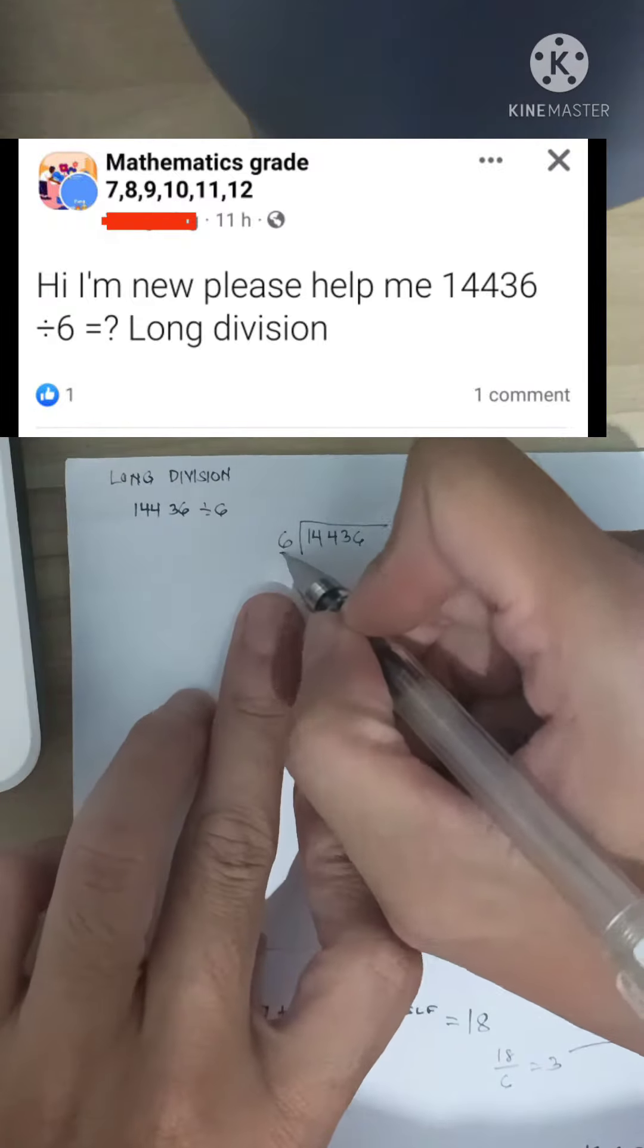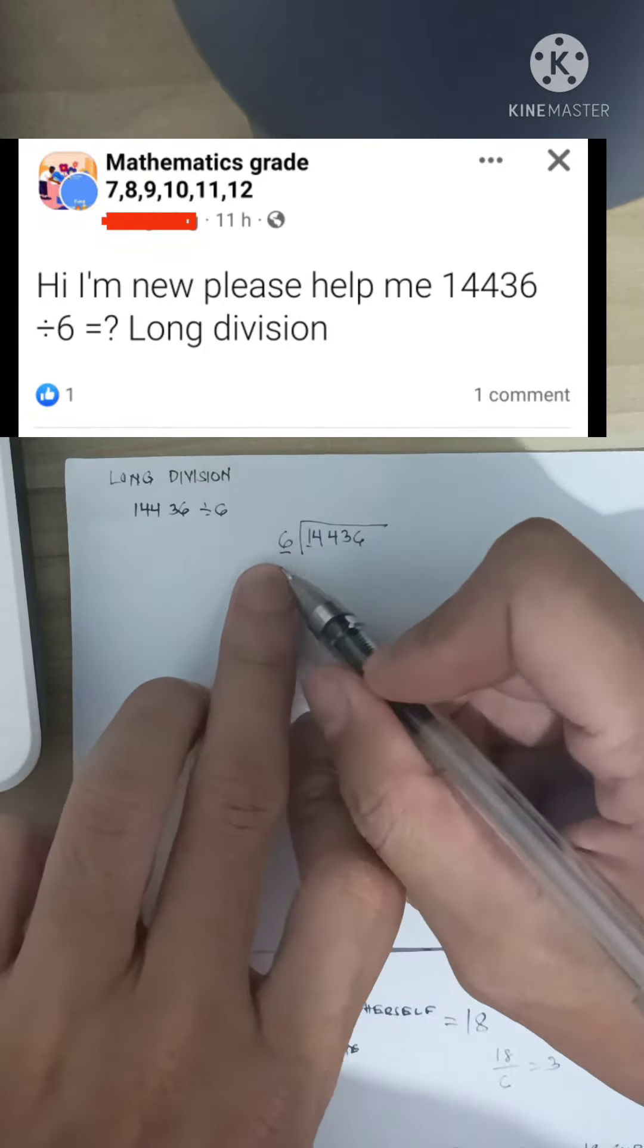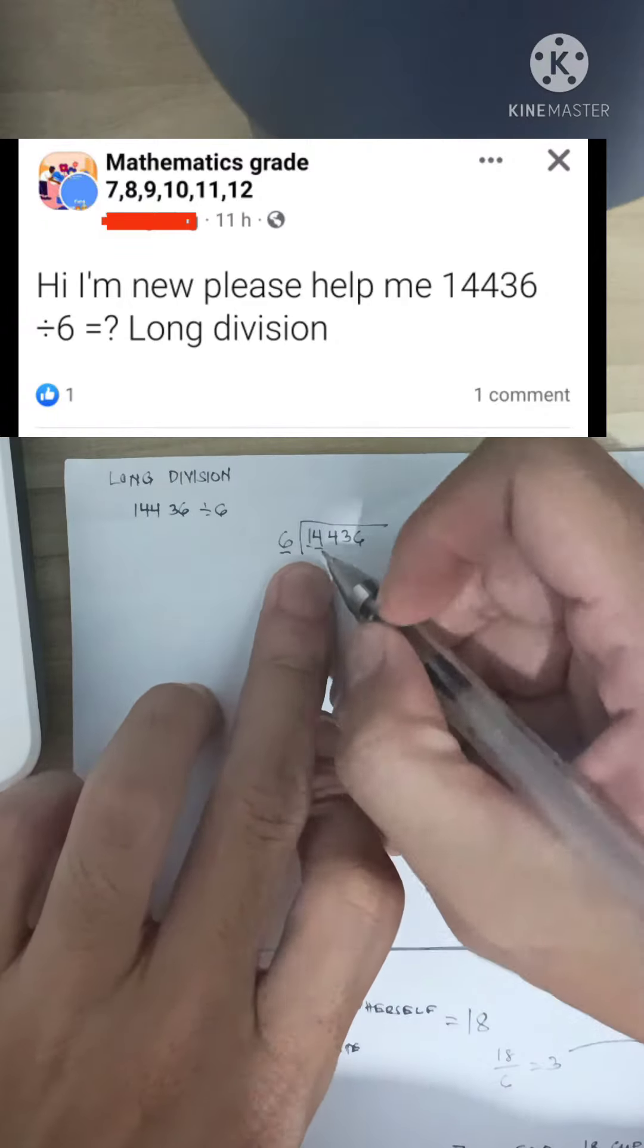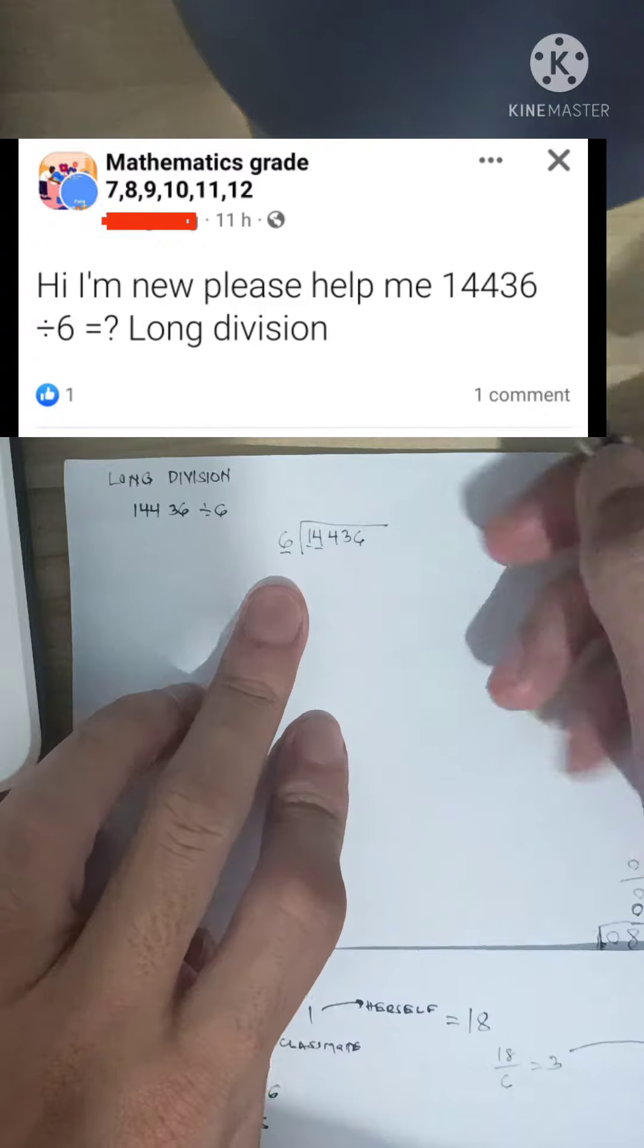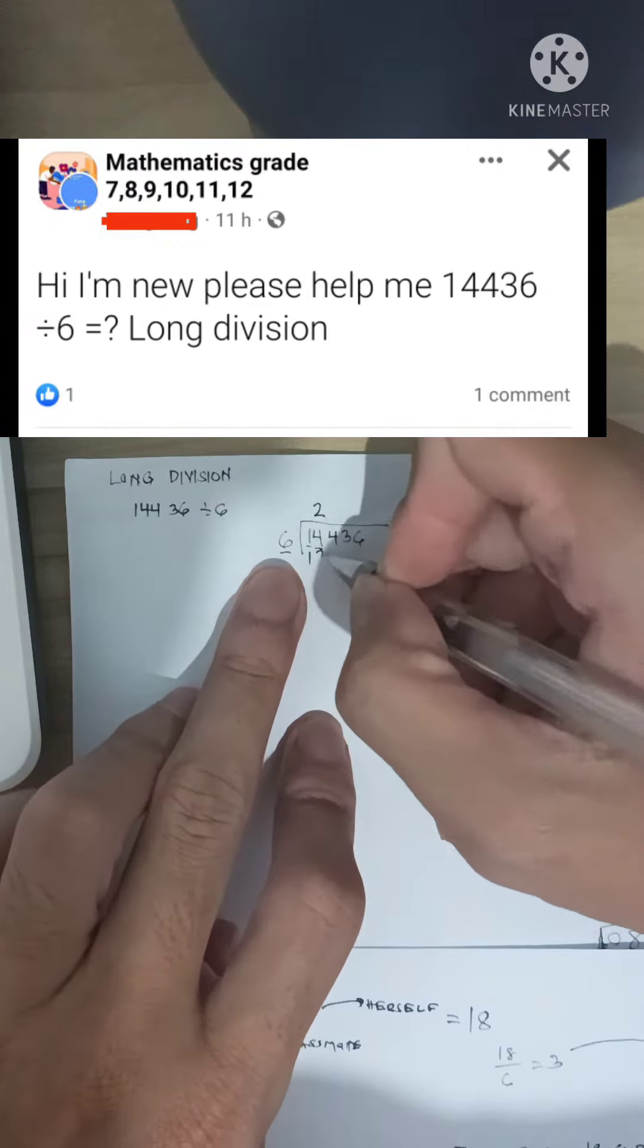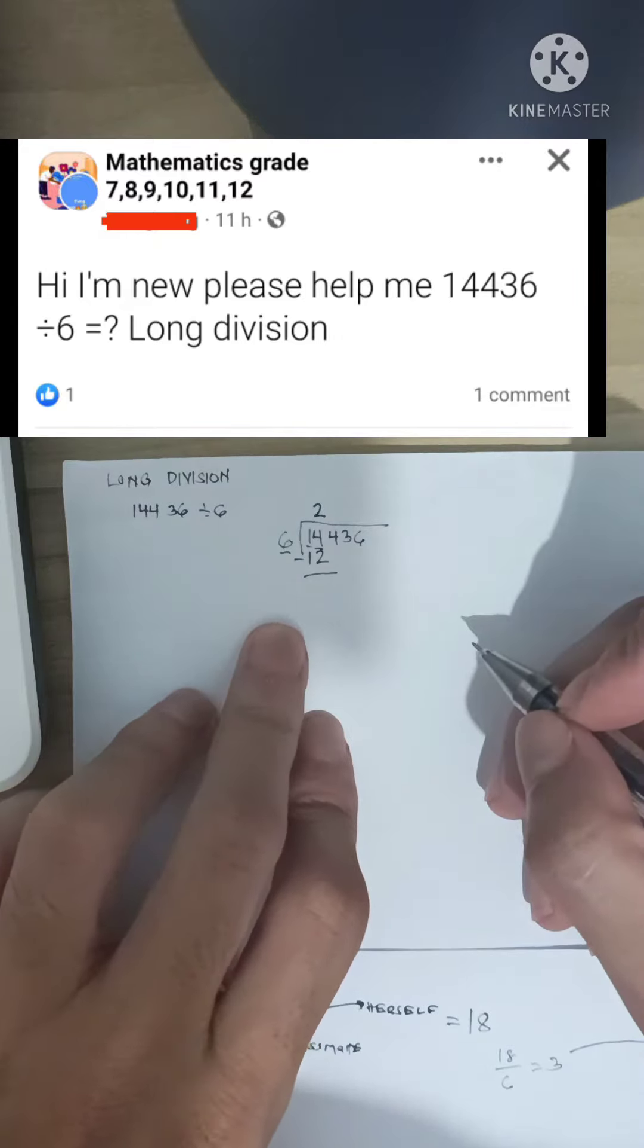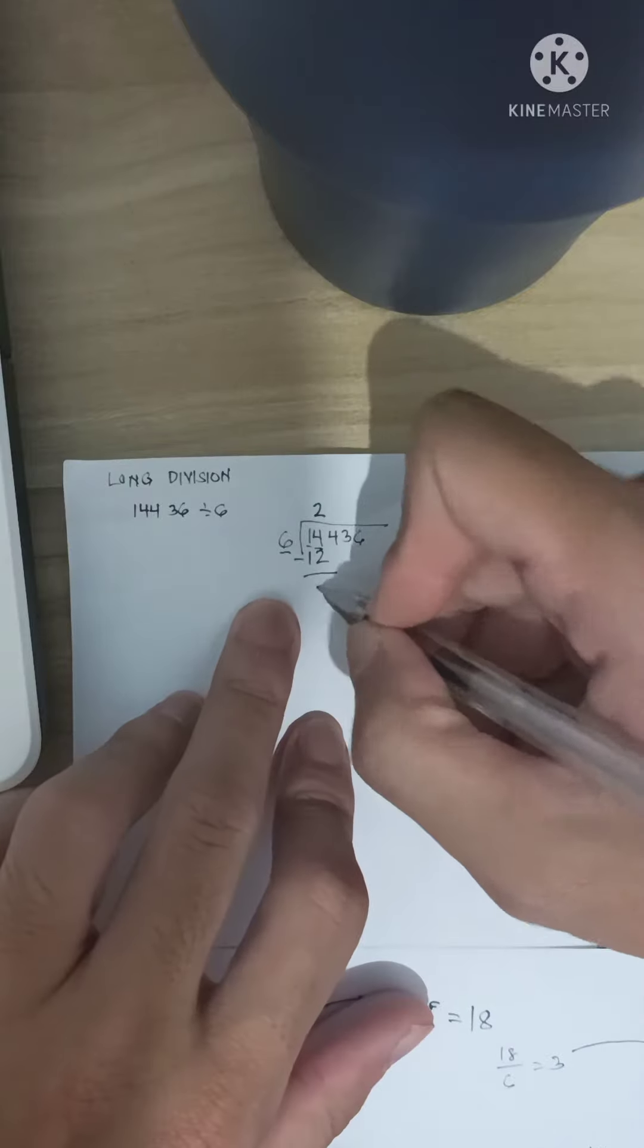Okay, first, look at this. 6 and 1. Look at the first number. Which is bigger? 6, right? So, we must start with the second number. So, 14 divided by 6. How many 6 in 14? 2. So, we have 2. 2 times 6 is 12. And then, we perform the subtraction operation. 14 minus 12 is 2.